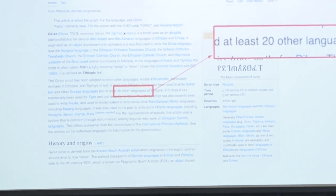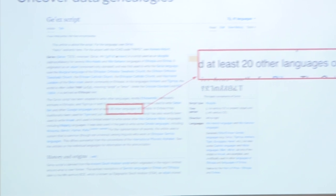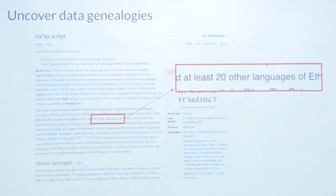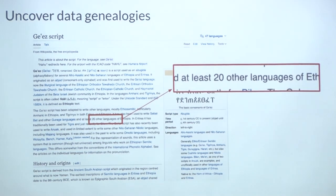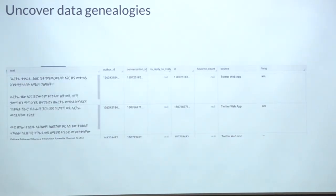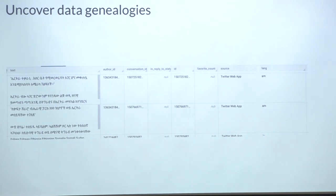But Ge'ez is used to write around 20 different languages. This made us really suspicious because we knew we had examples of tweets written in Ge'ez that were not in Amharic, which made us suspect that everything written in Ge'ez was being labeled as Amharic. And it turns out, with a little more digging, we did find this to be the case. It did not reliably detect Amharic well — it labeled all the other Ge'ez languages as Amharic.